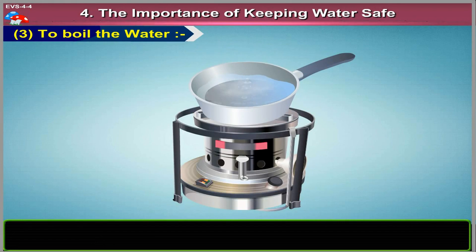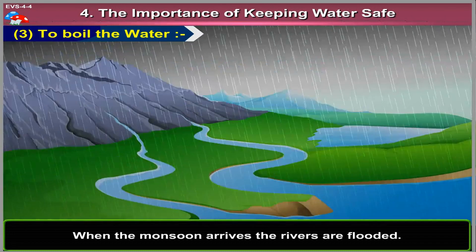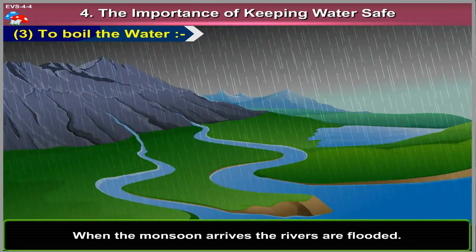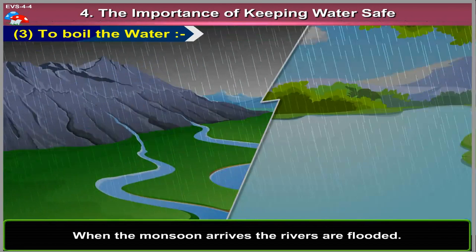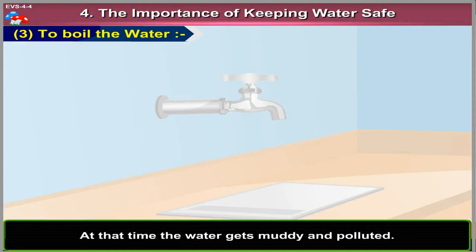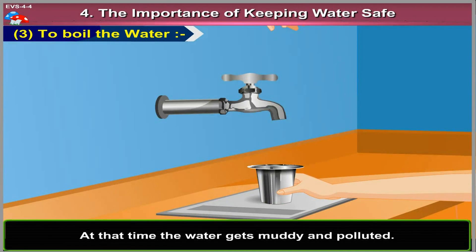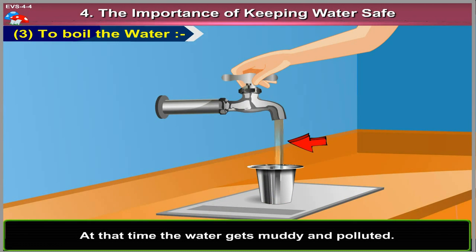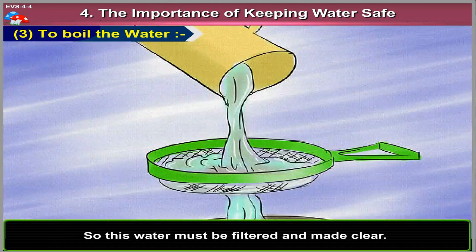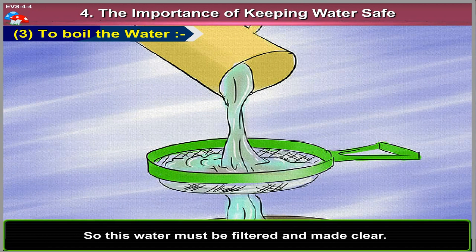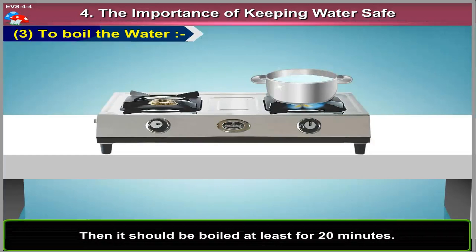Method 3: To Boil the Water. When the monsoon arrives, the rivers are flooded. At that time the water gets muddy and polluted. So this water must be filtered and made clear, then it should be boiled for at least 20 minutes.